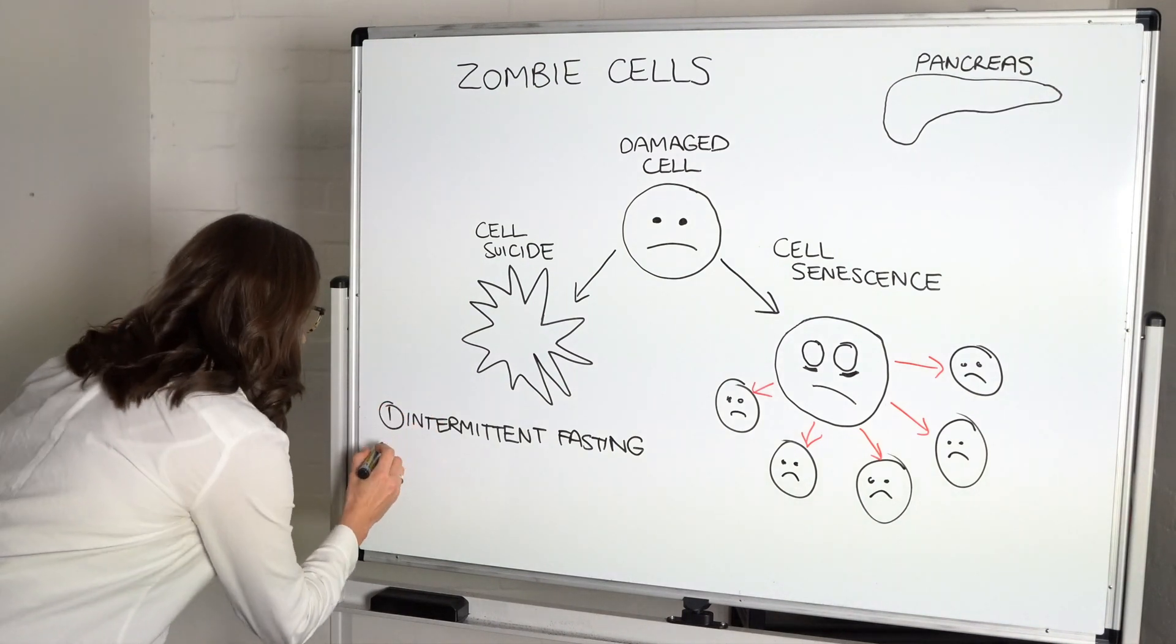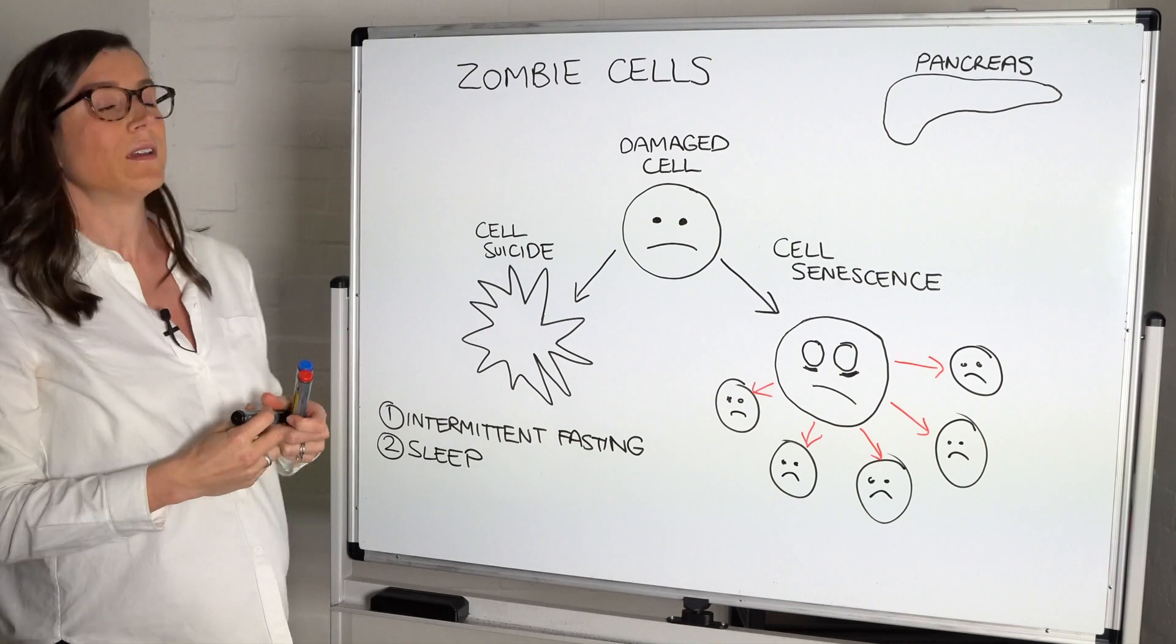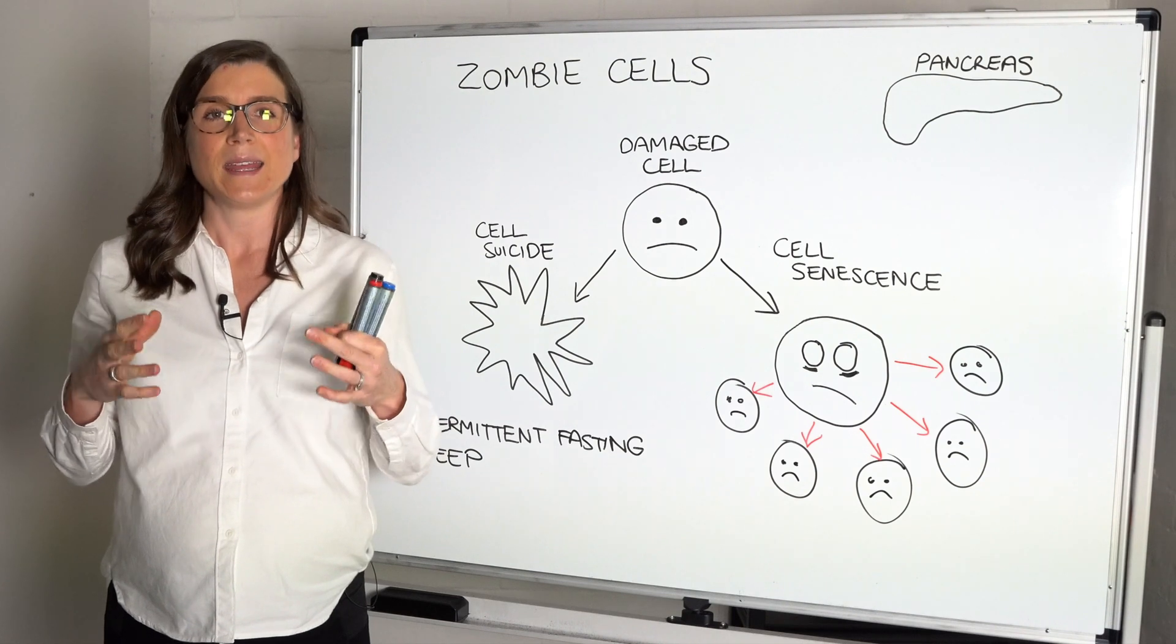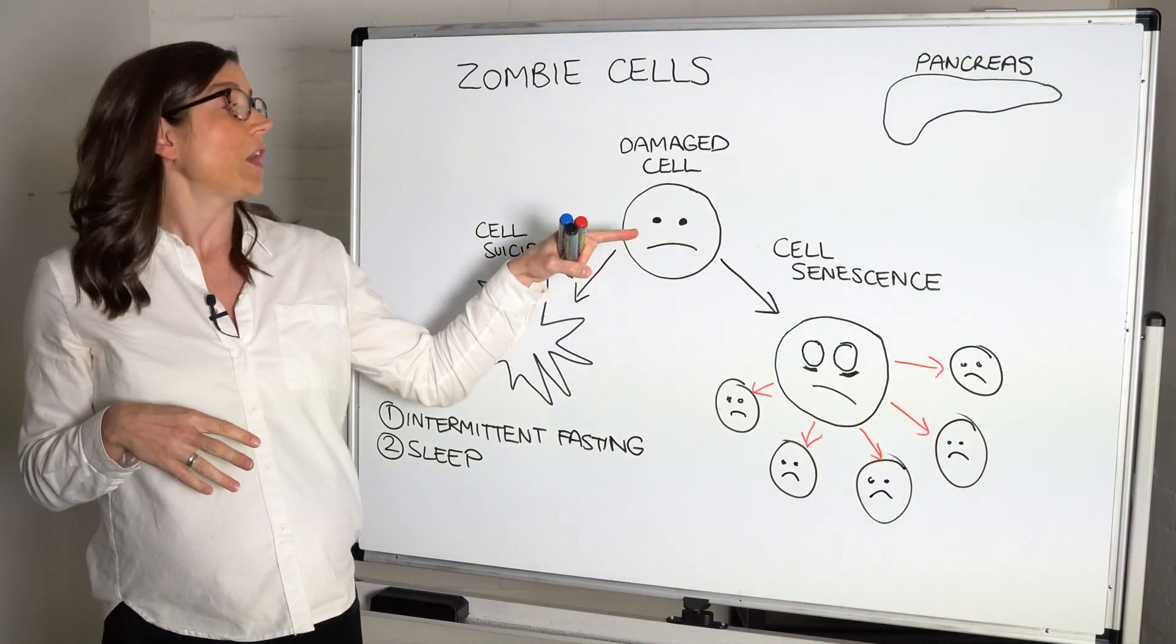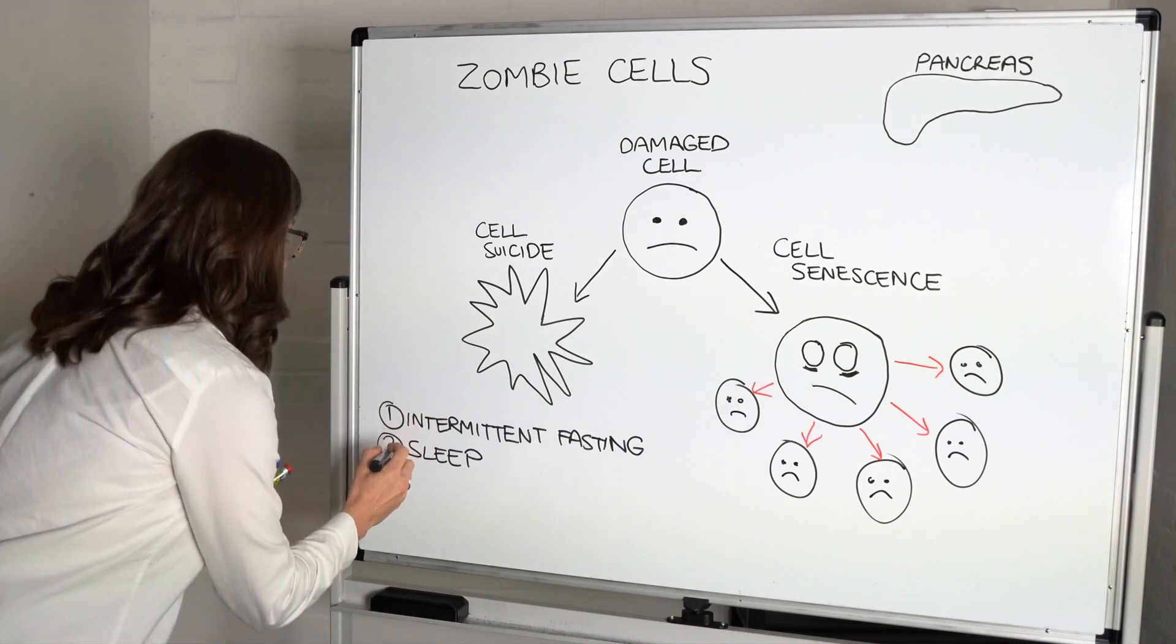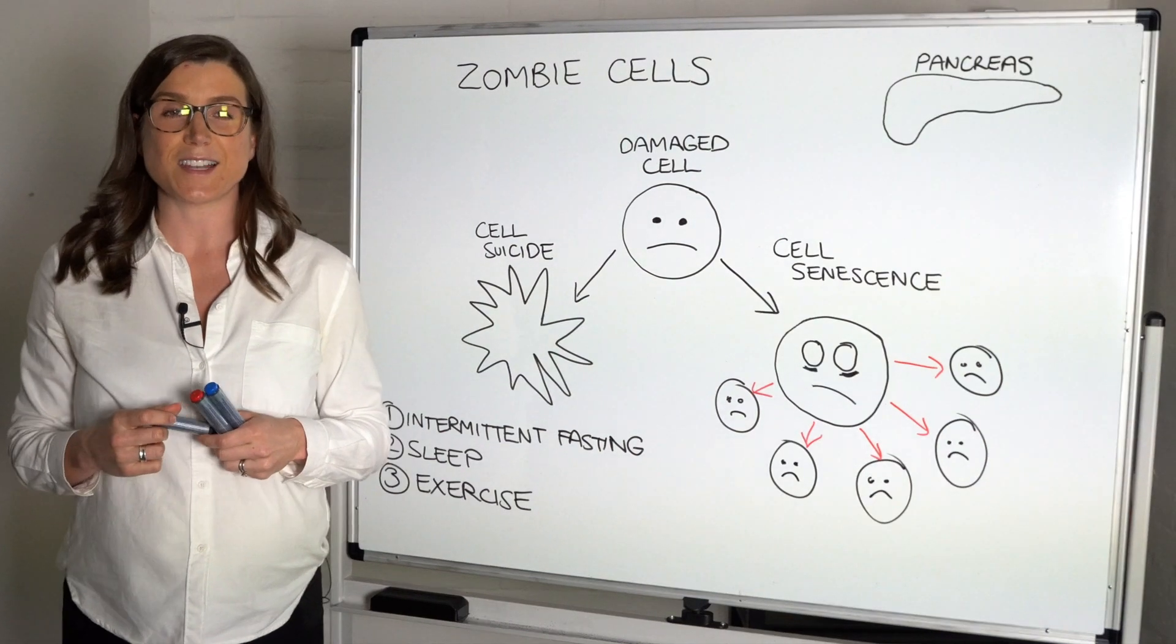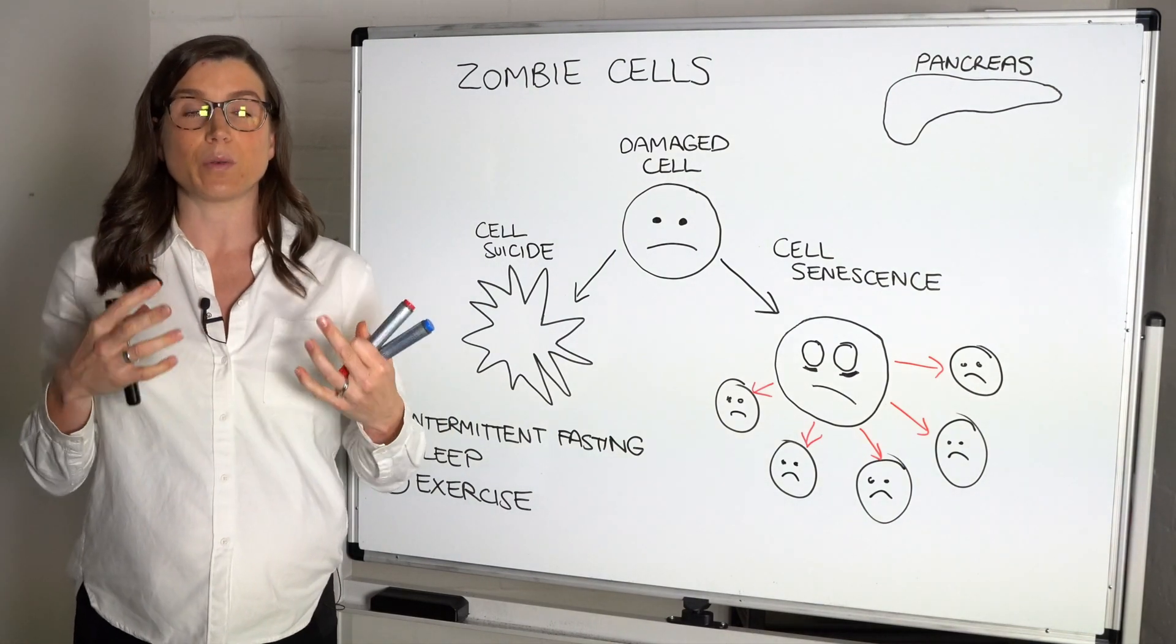So intermittent fasting is one way. Sleep is another way. I mean when you're sleeping you're technically fasting, and it's the same kind of thing. It's giving your body that time to really do a good spring clean—clean up things, faulty things—and get rid of waste. And helping to, if there are damaged cells, helping these damaged cells to repair so they don't go down either of these pathways. So sleep is really important. Exercise—so exercise is another really good way of promoting autophagy, so spring cleaning, getting rid of faulty cells, and promoting the growth of new healthy cells.